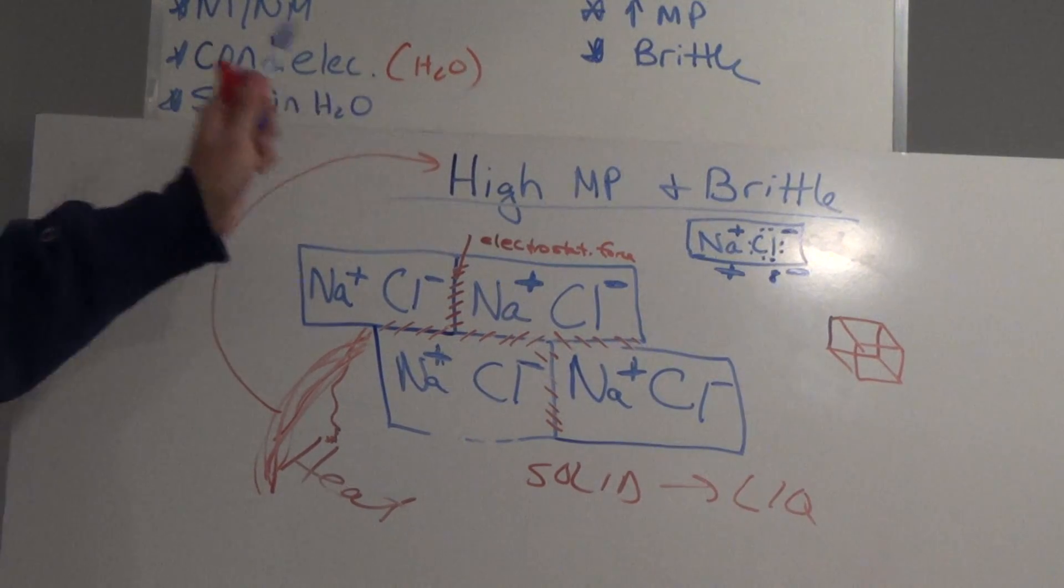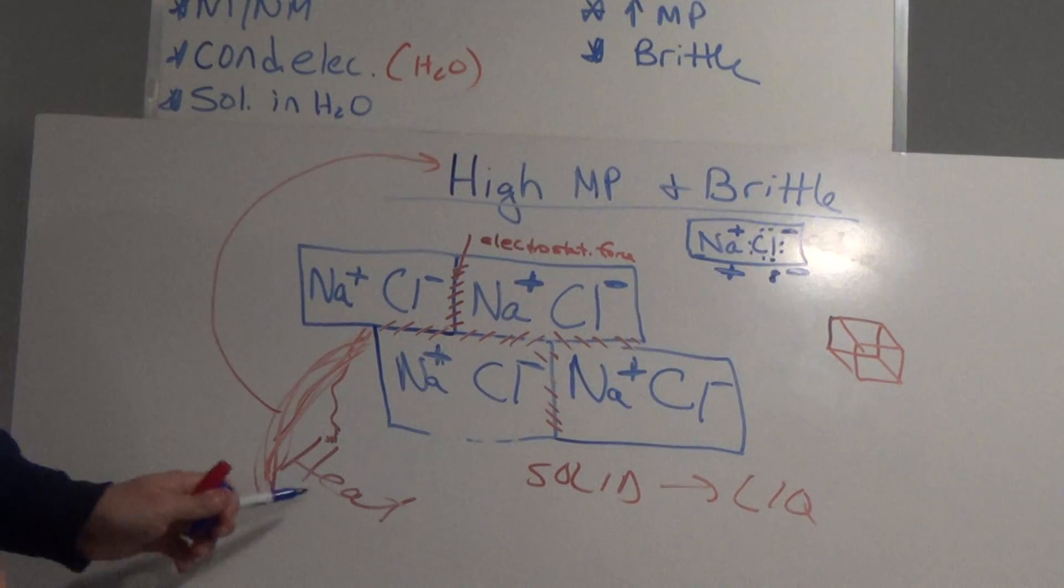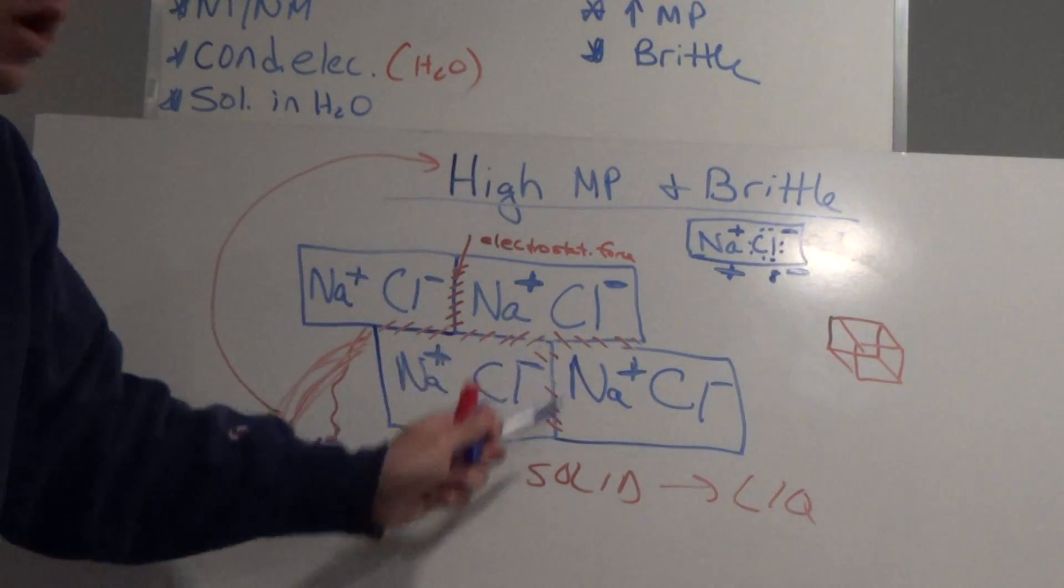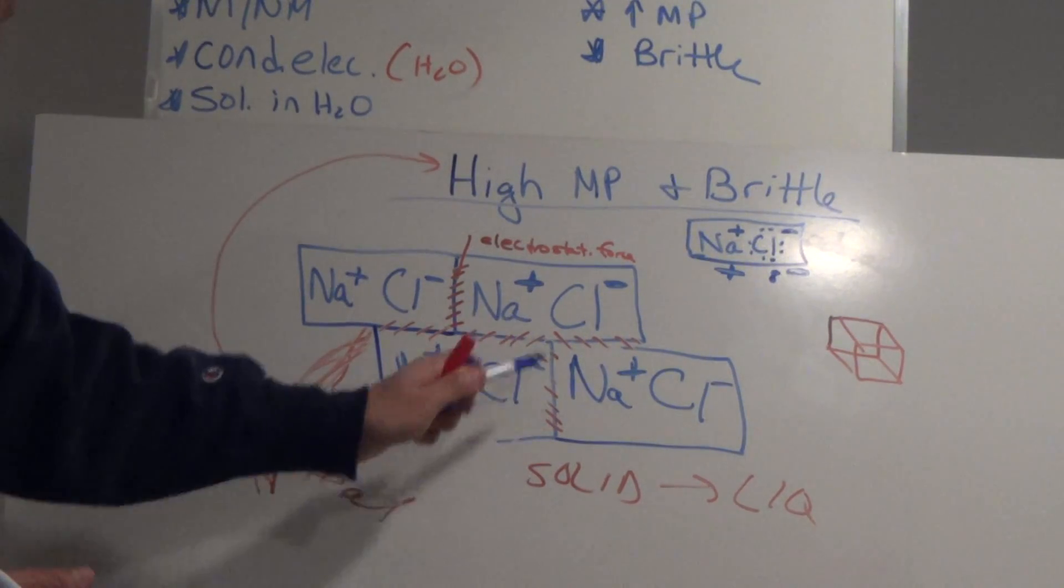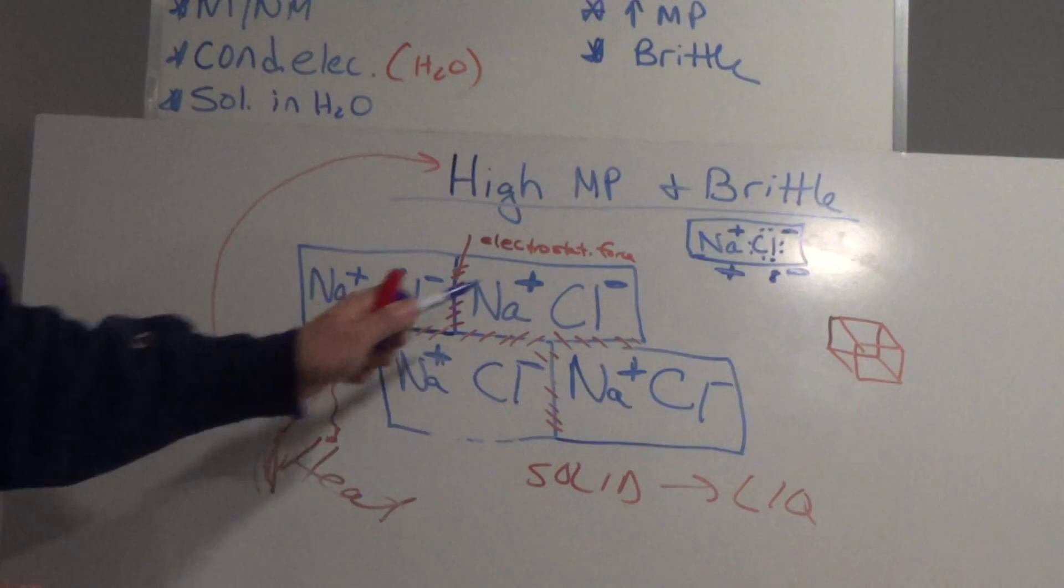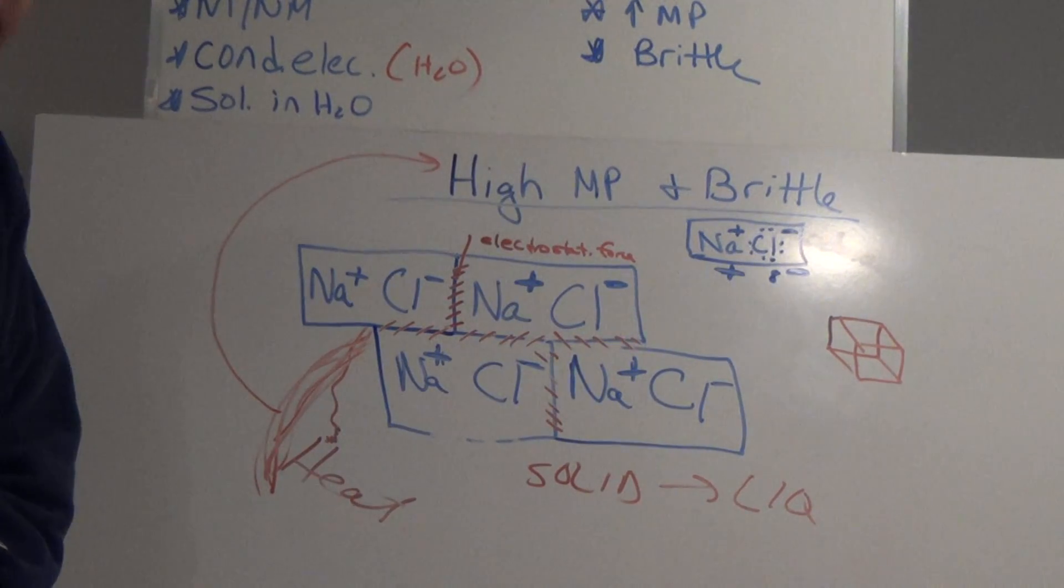So again, these are the five properties, this is part two, high melting point. We just talked about heat being energy, doing work on something, it's going to take a lot of work, a lot of energy to cause change. Why? Because these are stupidly strong forces that hold these molecules together. That's why the compounds have a high melting point.